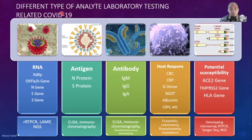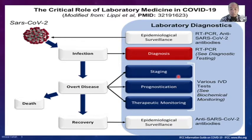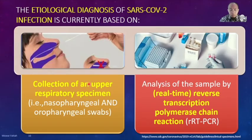There are different types of laboratory testing related to COVID-19. We can detect by RNA, antigen, antibody, host response, and potential susceptibility. Today we will focus on the quality of RNA testing with real-time PCR. Molecular testing has higher sensitivity and specificity compared with antibody and antigen testing. That is why IFCC recommends RT-PCR as a diagnostic tool, while antibody testing can be used for epidemiological surveillance. Etiological diagnosis of SARS-CoV-2 infection is currently based on collection of respiratory specimens used in real-time PCR, making it very important to standardize and maintain the quality of real-time PCR.